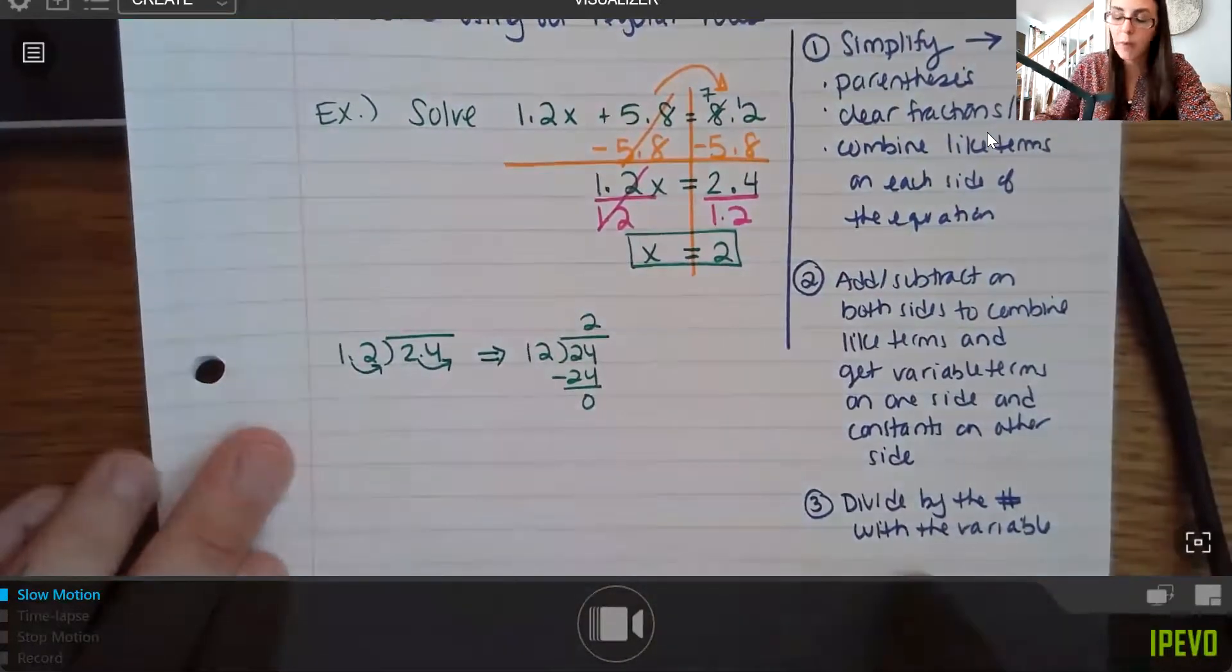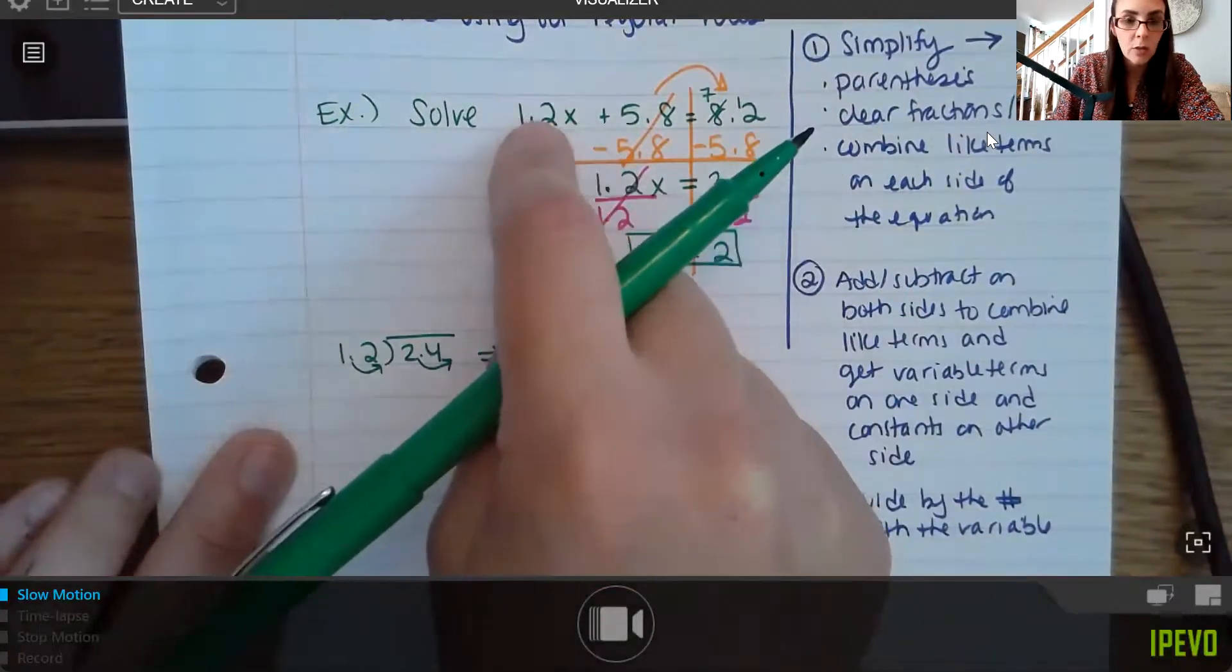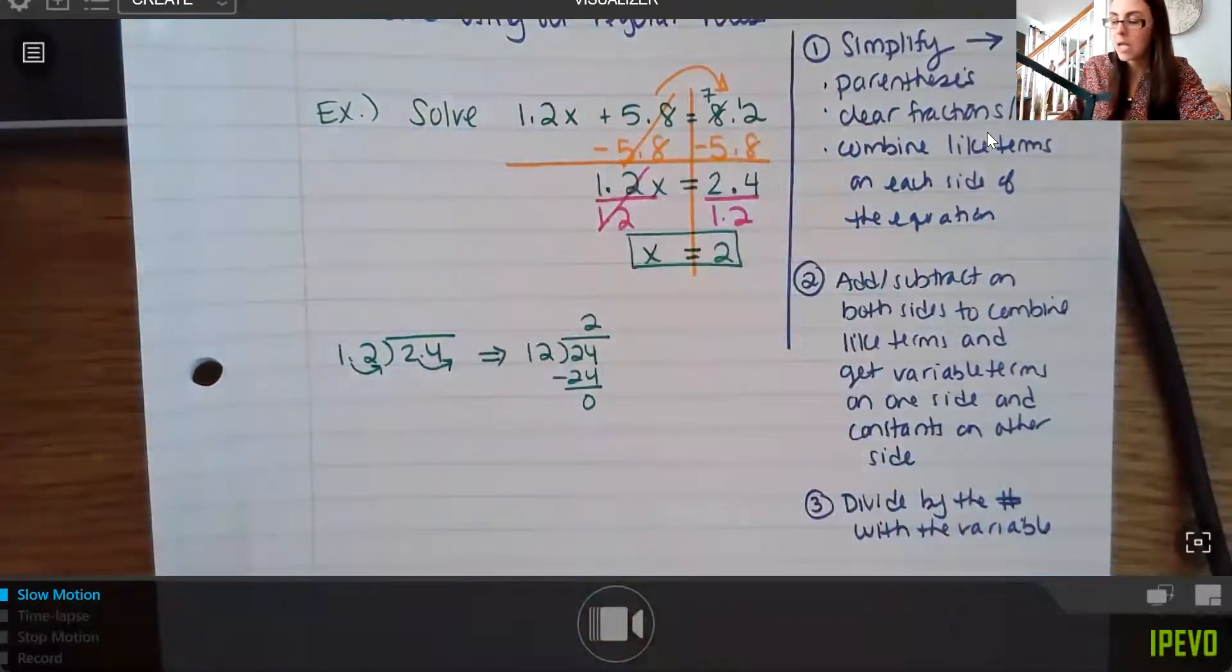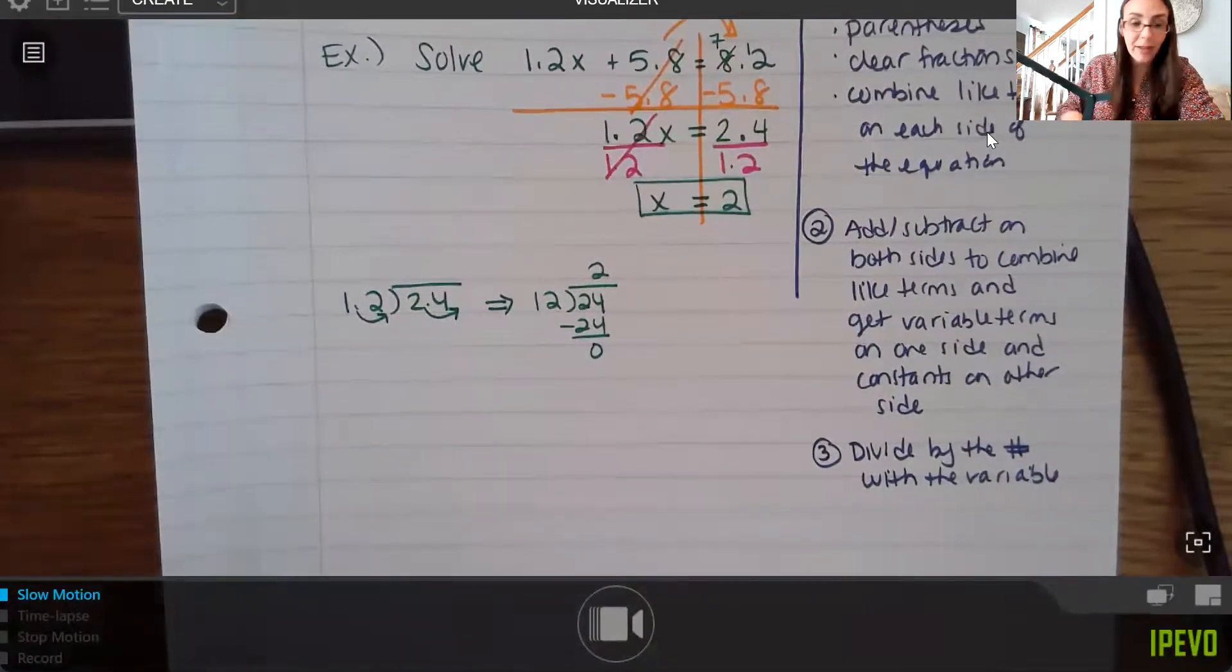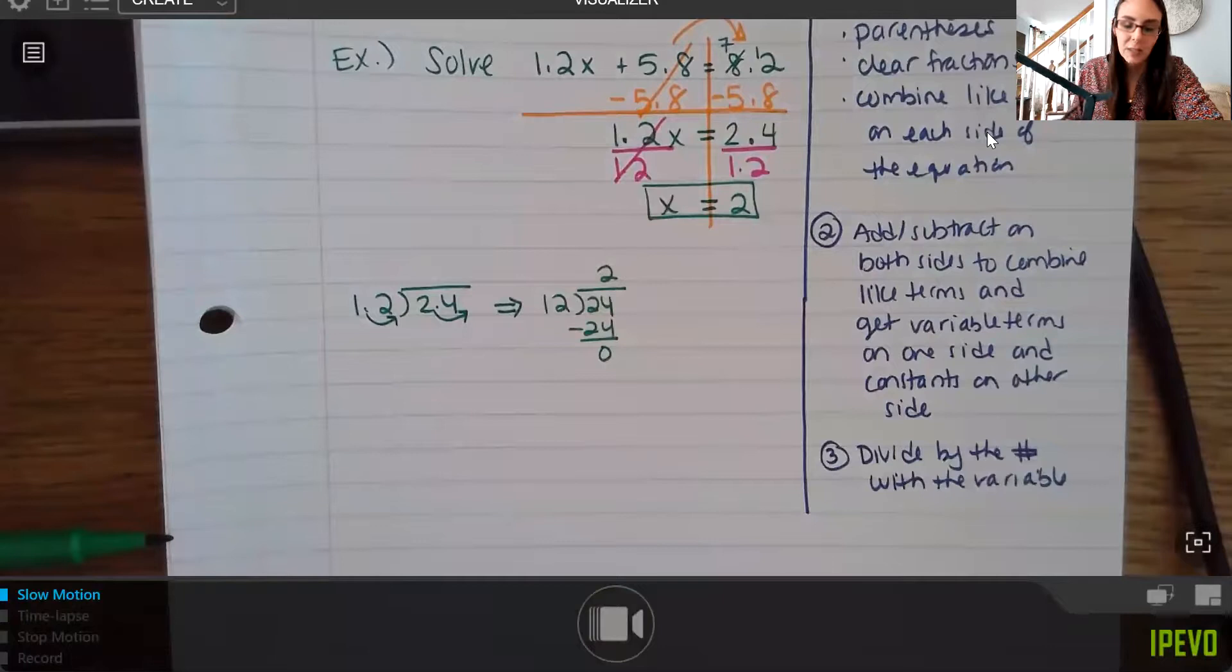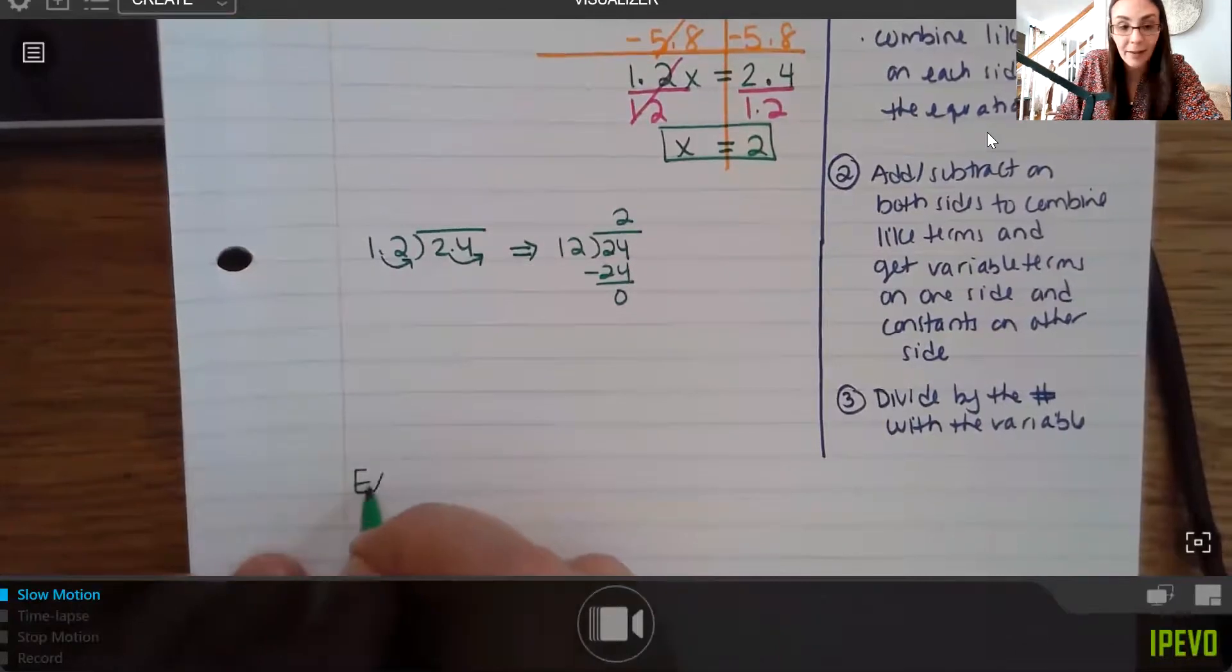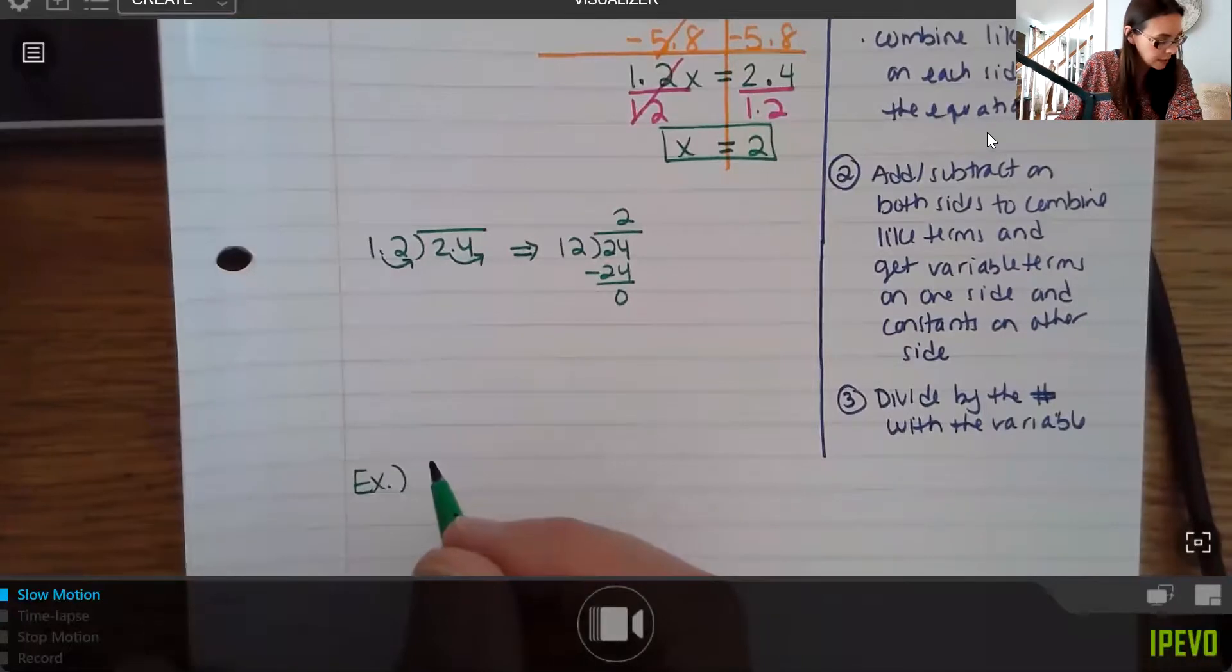Now your fourth step, I'm not going to write it in, but you always can check, right? So if I plug 2 back into the problem here, I multiply it by 1.2. I add to 5.8. I should get 8.2 on the other side. You should get a true statement. And I will say that solving with decimals is really not a big deal if you're using calculators, right? Because our calculator can handle the division and the adding and subtracting quite easily and quite quickly. So using the decimal and leaving it in decimal form like this is really not a big deal if you're using a calculator. However, we're not using a calculator right now. So it does make it more challenging.